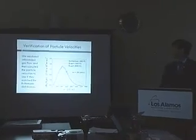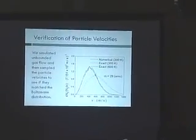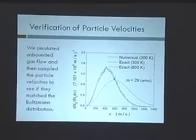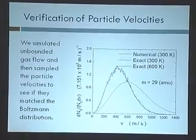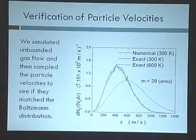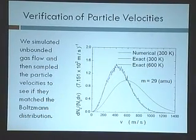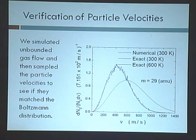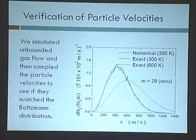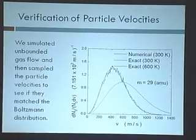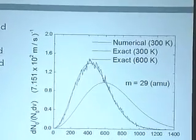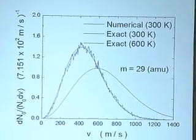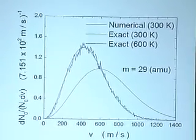The first step we took to verify our model was to check if our Boltzmann distribution was correct. We simulated an open area with free gas flow and then sampled the particle velocities after a period of time to see if they matched our Boltzmann distribution. As you can see, the blue line is our simulated data and the red line is the exact numerical data, and we have a very close fit, which means our Boltzmann distribution is being reproduced correctly.